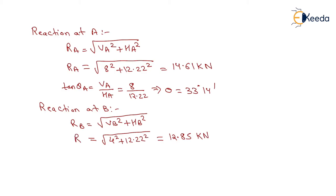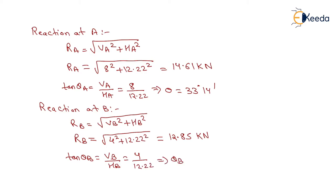The value of Rb is 12.85 kilonewtons. Its inclination with the horizontal is tan(θB) equals VB/HB equals 4/12.22, giving θB equals 18 degrees 6 minutes.